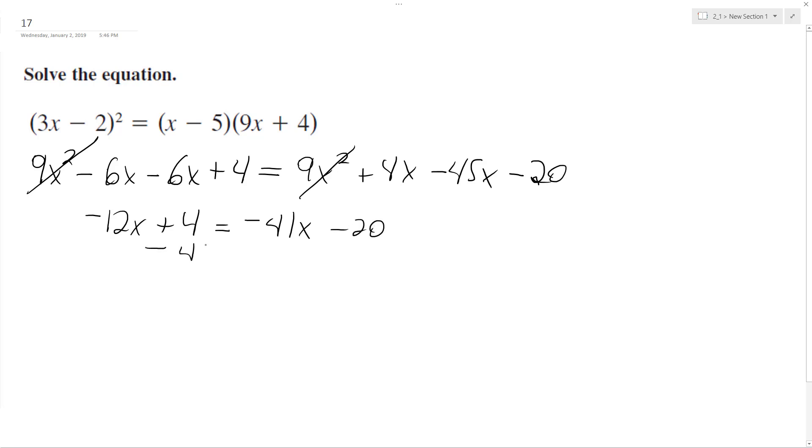So move the constants to one side and then move the x's to one side. We end up with 29x equals negative 24.